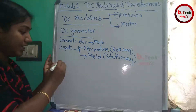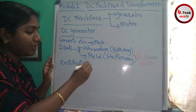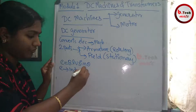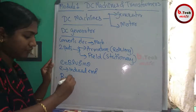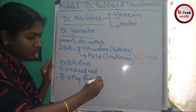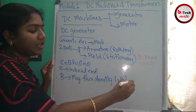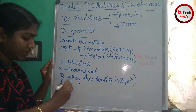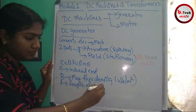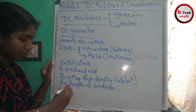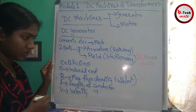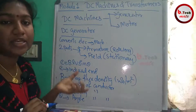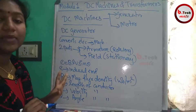That induced EMF E is equal to BLV sinθ. This is called the dynamically induced EMF. The magnitude is BLV sinθ, where E is the induced EMF, B is the magnetic flux density (in Tesla per meter square), L is the length of the conductor, V is the velocity of the conductor, and θ is the angle of the conductor.